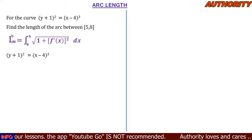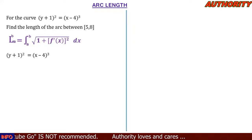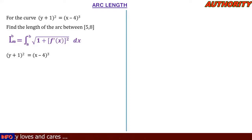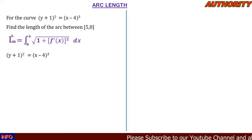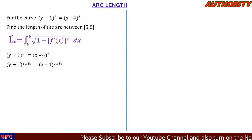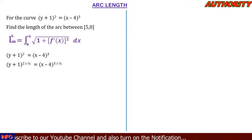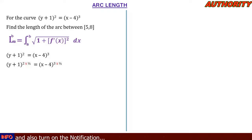We have the curve (y+1)² = (x-4)³. Let's make y the subject to put the function in standard form. The exponent of (y+1) is 2, so we multiply both sides by the exponent 1/2. On the left side, 2 times 1/2 gives 2/2 which equals 1, so we have y+1.